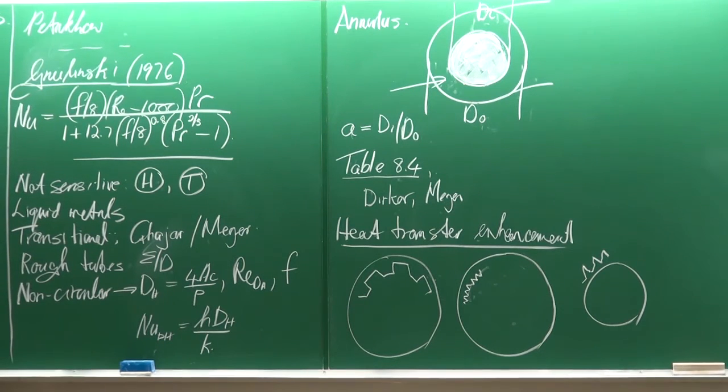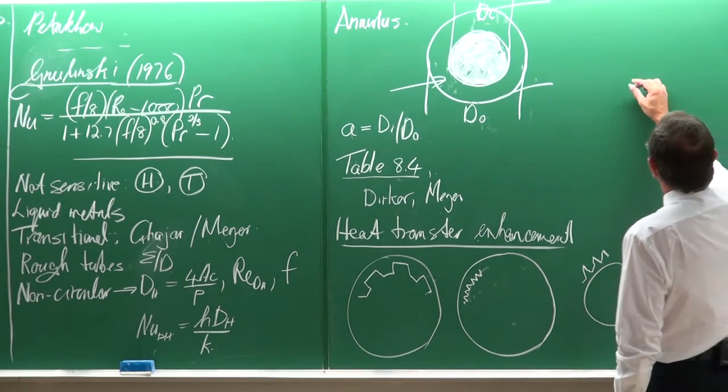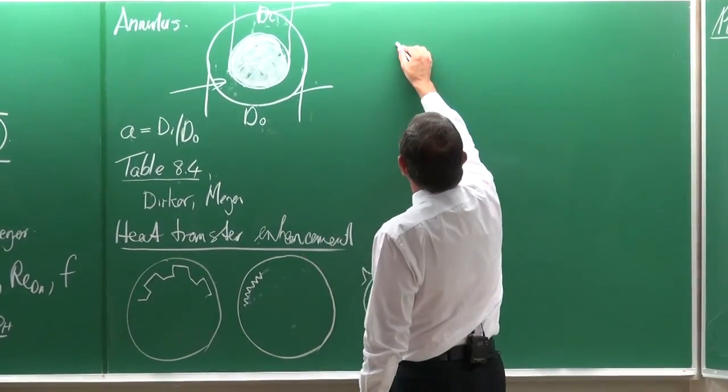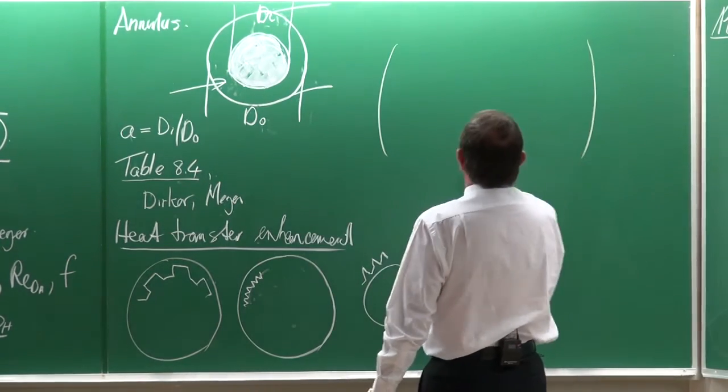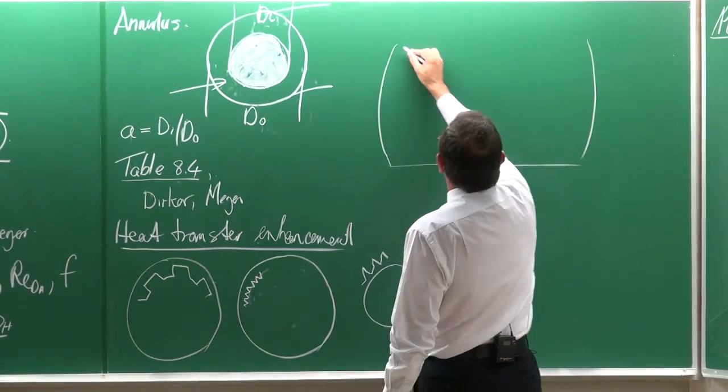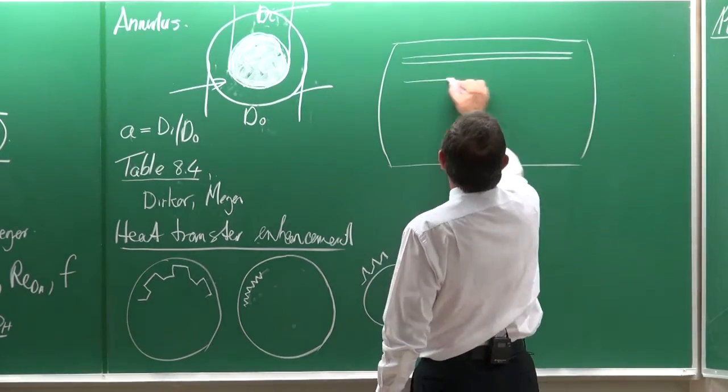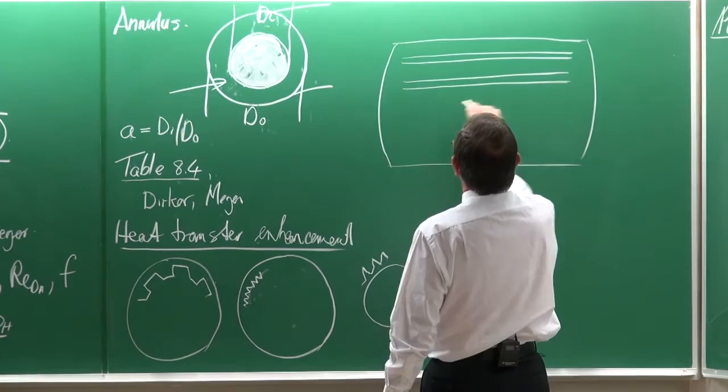Now, let's look at a case where and some of you might be familiar with it of a chiller where you've got many tubes like that. It can be actually a hundred of them.